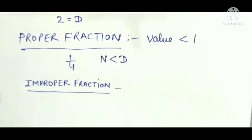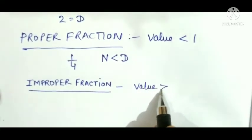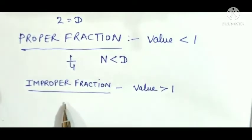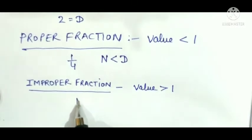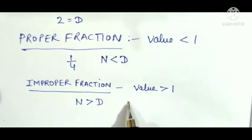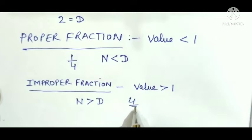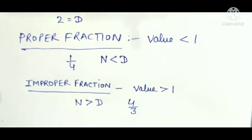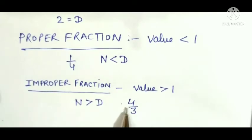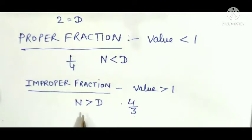Next is improper fraction. An improper fraction is a fraction whose value is greater than one — ek fraction jis ki value ek se badi hai. In other words, the numerator is greater than the denominator. For example, 4/3: here the numerator 4 is greater than the denominator 3, so the value is greater than 1. A fraction in which the value is greater than 1 is called an improper fraction.